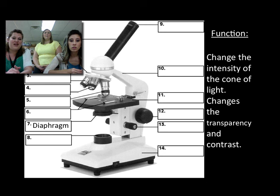This is the diaphragm. It changes the intensity of the cone of light that comes through and changes the transparency and contrast. If you need to adjust that to see your image better, that's what you would use.